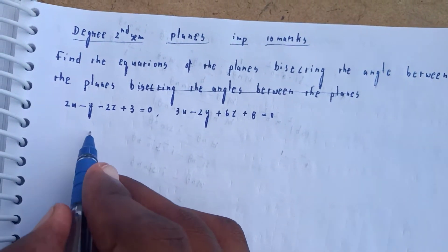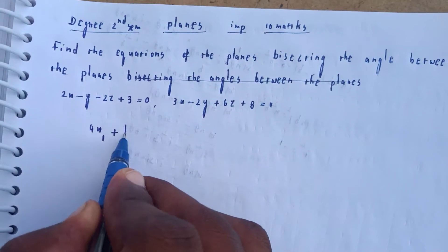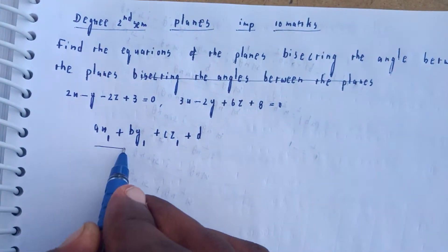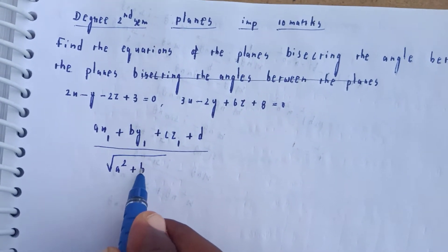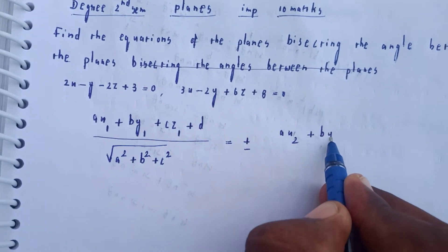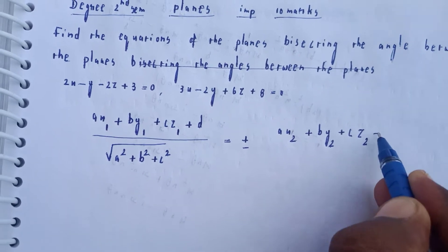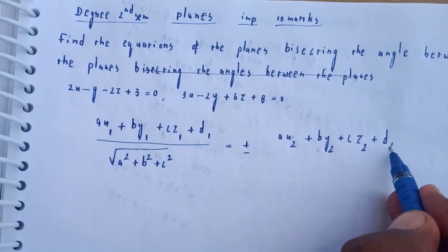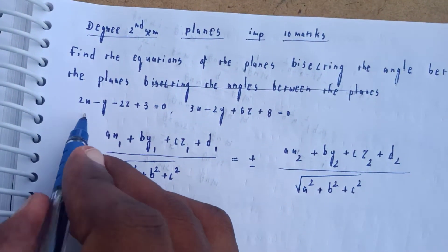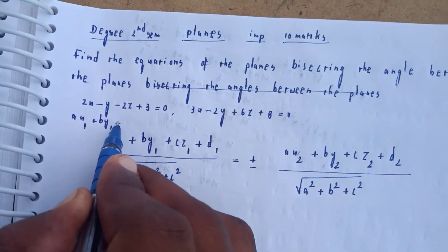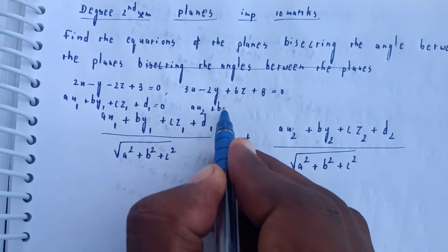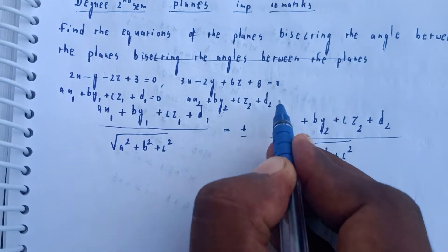To find the bisecting angle between the planes, the formula is: (a·x₁ + b·y₁ + c·z₁ + d) divided by the square root of (a² + b² + c²) is equal to plus or minus (a·x₂ + b·y₂ + c·z₂ + d₂) divided by the square root of (a² + b² + c²). Here d₁ and d₂ are the respective constant terms.